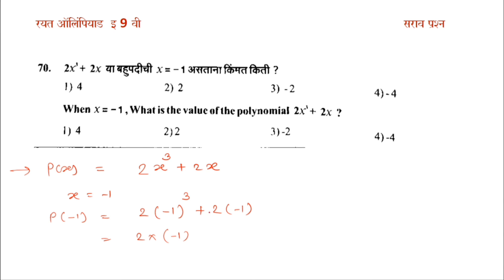2 into minus 1 is minus 2. Then minus 2 minus 2 equals minus 4. So the result is minus 4.